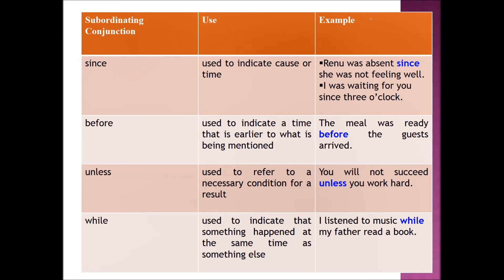BEFORE is used to indicate a time that is earlier than what is being mentioned. Example sentence: 'The meal was ready before the guests arrived.' UNLESS is used to refer to a necessary condition for a result. Example sentence: 'You will not succeed unless you work hard.' WHILE is used to indicate that something happened at the same time as something else. Example sentence: 'I listened to music while my father read a book.'